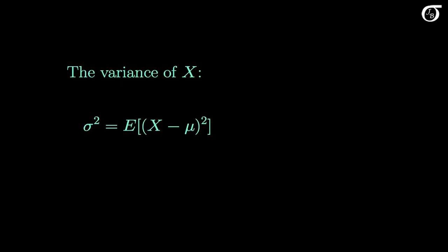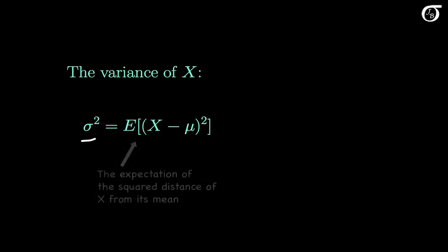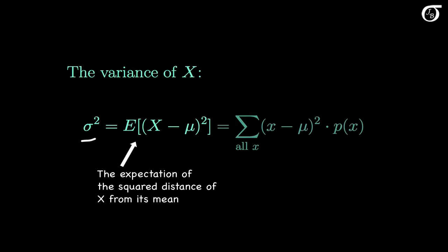We'll use that notion to calculate the variance of x. We often use sigma squared to represent the variance of a random variable. The variance of a random variable X is defined to be the expectation of (x minus mu) squared. This can be thought of as the expectation of the squared distance of x from its mean, and that's a measure of how much variability there is in x. To calculate that for a discrete random variable, we take (x minus mu) squared, multiply it by its probability of occurring, and add that up over all x.